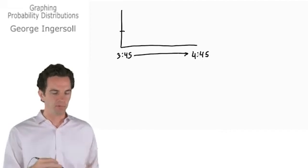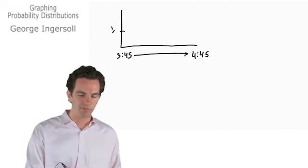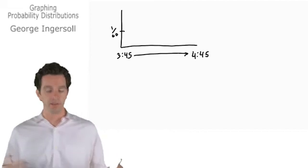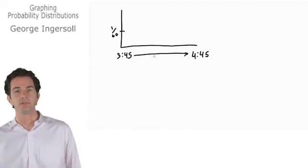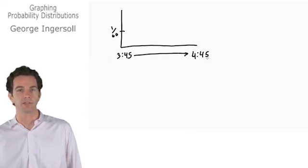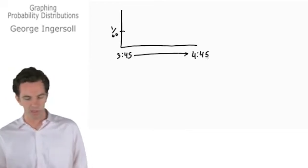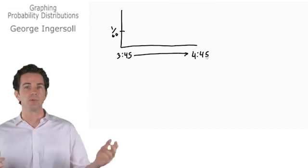The probability of him arriving at any specific minute is 1 over 60. The probability of him arriving at 3:57 is 1 over 60 because there's 60 possible outcomes and that's just one of them. The probability of him arriving at 4:41 is going to be 1 over 60.